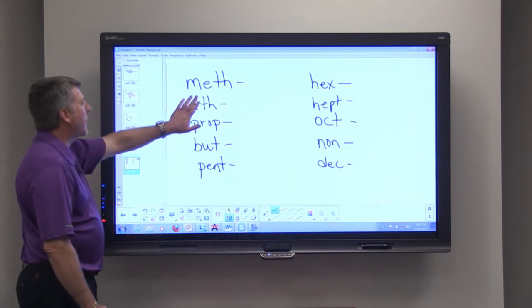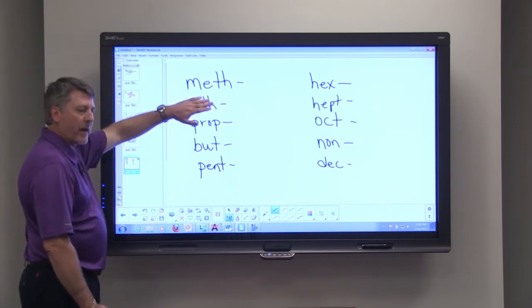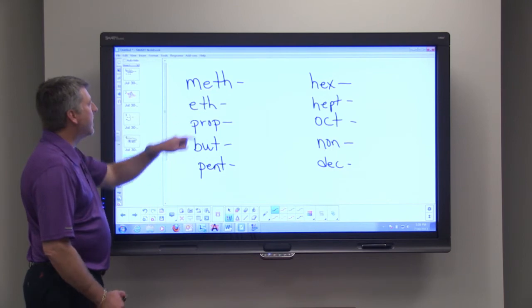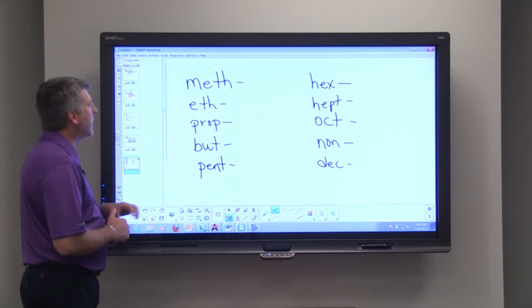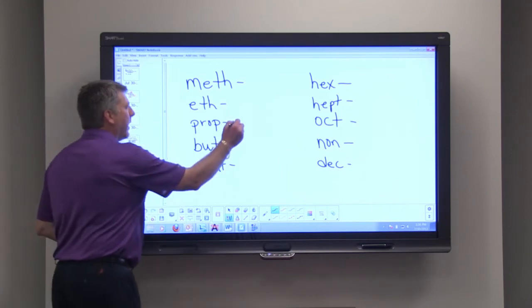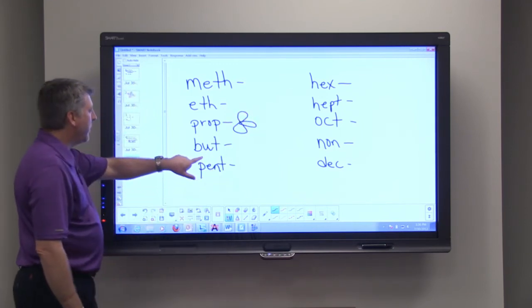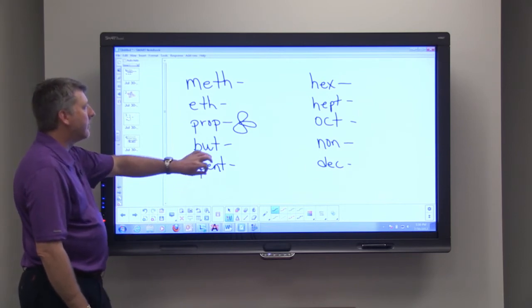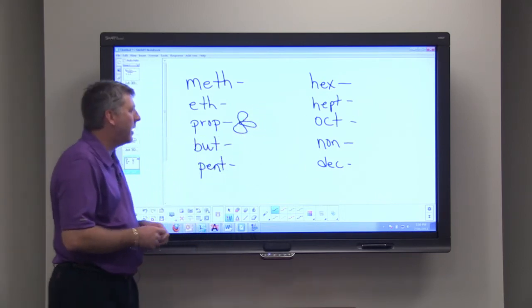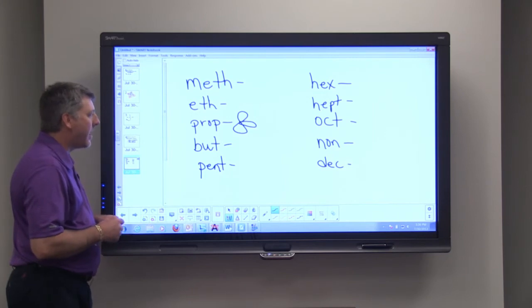So a compound that starts out with meth, like methane that we looked at just a second ago, only has one carbon. Eth means two. Prop means three. I always think about the propeller on the boat there. But means four, pent five, hex six, hept seven, oct eight, non nine, and dec for ten, like a decade.